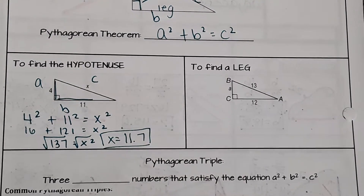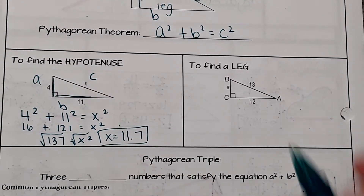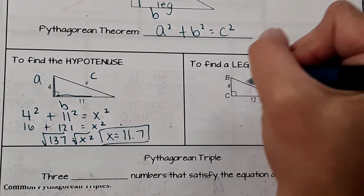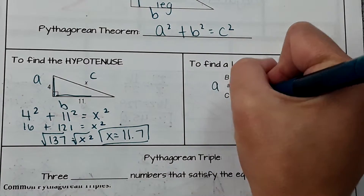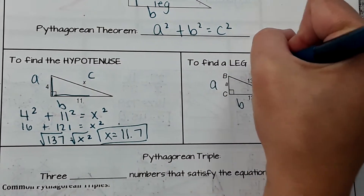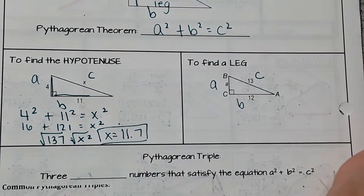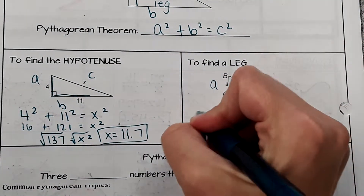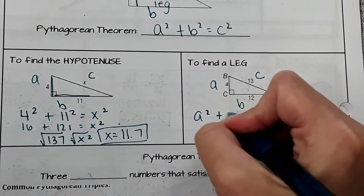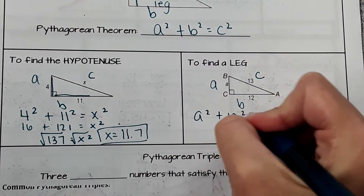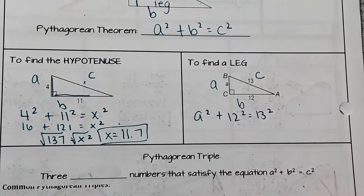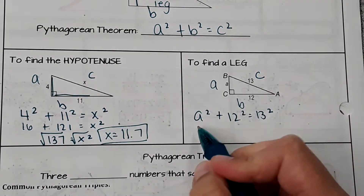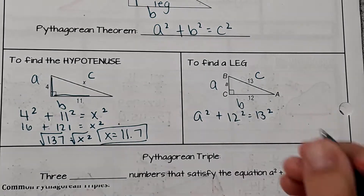The next example, we're finding a leg. So this time we're finding a, we have b, and we have c. Using the same equation: a squared plus 12 squared equals 13 squared. And then this time we're solving for a.